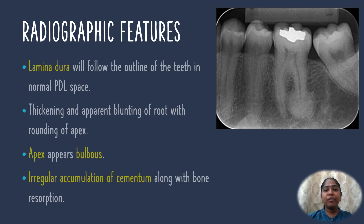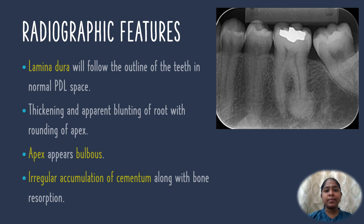Radiographic features: the lamina dura will follow along the outline of the teeth in the normal periodontal space. Thickening and apparent blunting of the tooth with rounding of the apex is seen, and the apex appears bulbous. There is also irregular accumulation of cementum along with bone resorption.